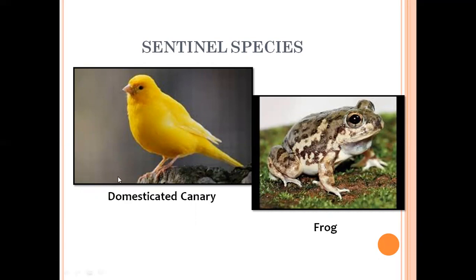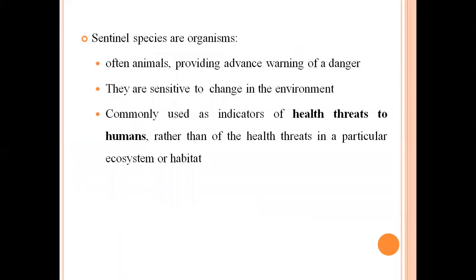For example, the domestic canary — as literature tells us, coal miners used to carry canaries inside mines. If carbon monoxide concentration increased, the birds would start behaving strangely, giving an early warning of a health threat to human beings. Similarly, frogs in streams or lakes indicate water quality — if the water is polluted, no frogs will be found. Sentinel species often provide advance warning of danger and act as indicators of health threats to humans.